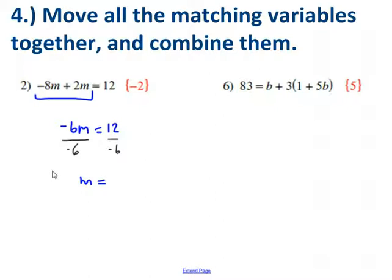Then the negative sixes cancel on the left, and I'm just left with m. And on the right, I've got twelve divided by negative six, which is negative two, just like I told you it should be.